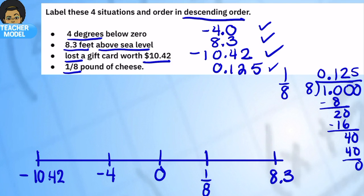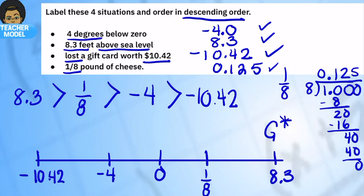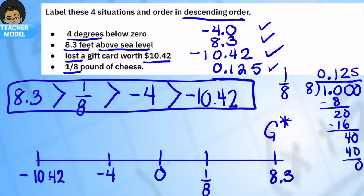But I want it in descending order, so I have to start with the biggest. So I have to start from the 8.3, that's my largest, and next is the 1/8 pound of cheese, followed by the negative 4. I'm not adding the zero because it's not one of the four situations, and then negative $10.42. So I have listed them in descending order. So hit pause here, take 30 seconds and jot this down in your notes. We'll go right into the guided practice.